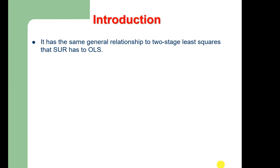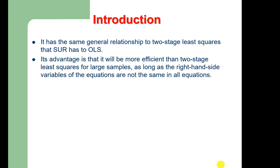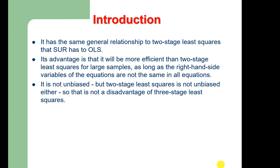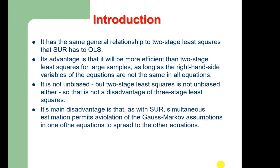This technique is known as three stage least squares — the instrumental variables equivalent to seemingly unrelated regression. It has the same general relationship to 2SLS that SUR has to OLS. Its advantage is greater efficiency than 2SLS for large samples, as long as the right-hand side variables are not identical across all equations. Like 2SLS, 3SLS is not unbiased, so this is not a unique disadvantage. Its main disadvantage is that, like SUR, a violation of Gauss-Markov assumptions in one equation can spread to other equations.